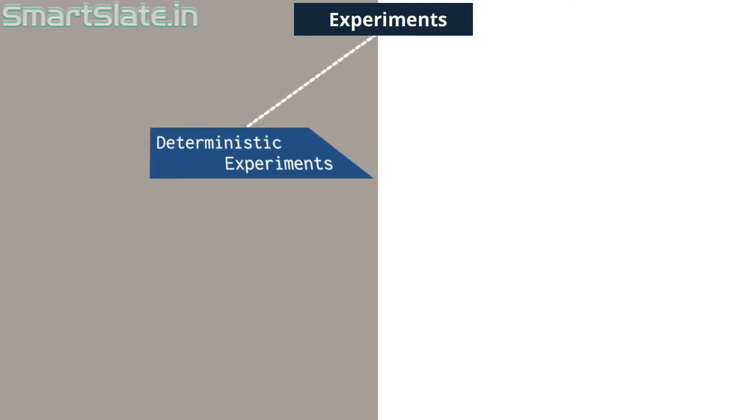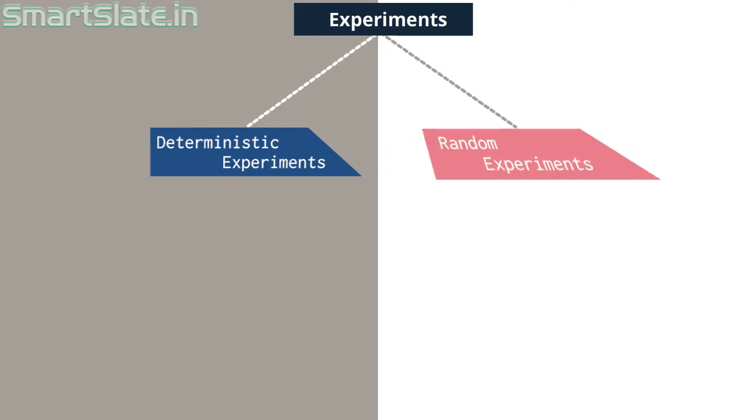In experimental probability we conduct experiments to conclude probability ratio. These experiments can be of two types. Deterministic or predictable experiments. Second one is random experiments. Predictable experiments are those experiments when repeated under identical conditions produce the same result or outcome.